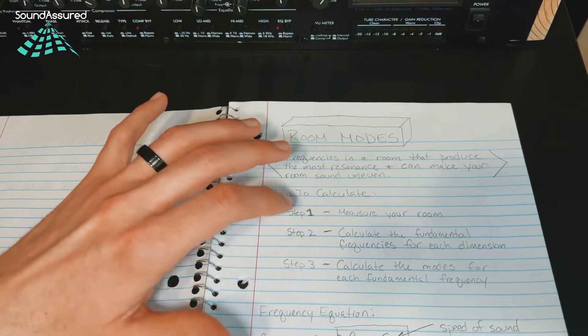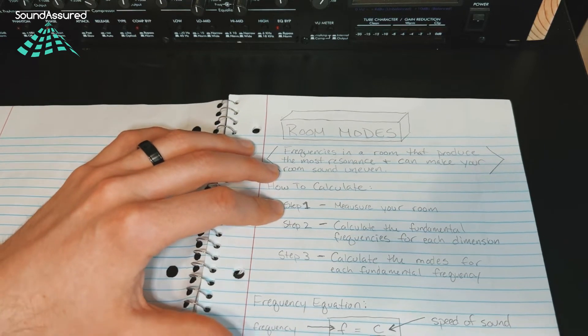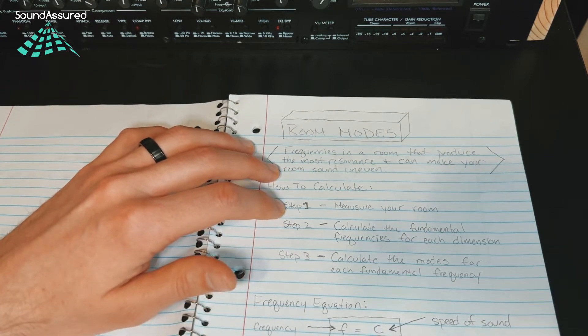How to calculate these: the first step is you measure your room. So you want to measure from one wall to the other. You're going to have three measurements - the walls and then the ceiling to the floor.